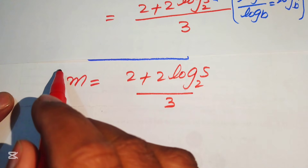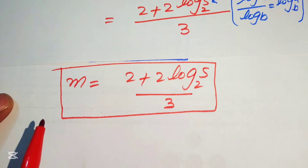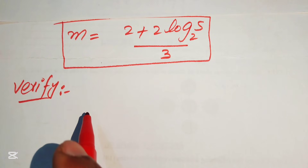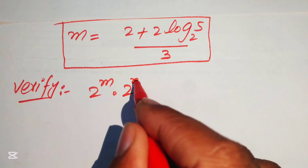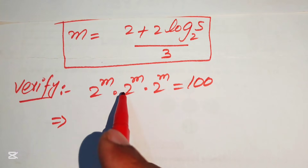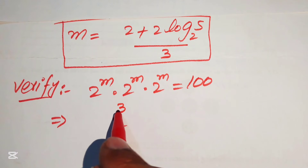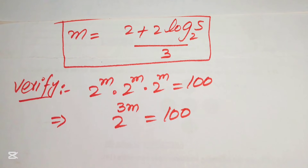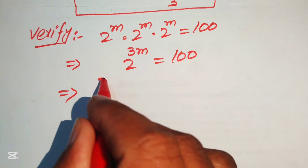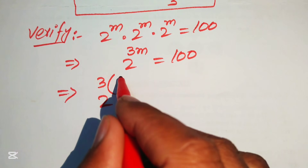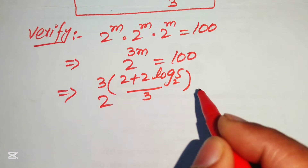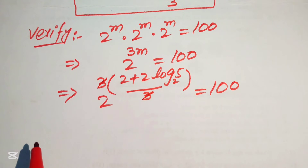Now we verify this value of m. We copy down the original equation: 2 to the power of m times 2 to the power of m times 2 to the power of m equals 200, which simplifies to 2 to the power of 3m equals 200. Substituting m, we get 2 to the power of 3 times the quantity 2 plus 2 log base 2 of 5, divided by 3, equals 200. The 3s cancel.